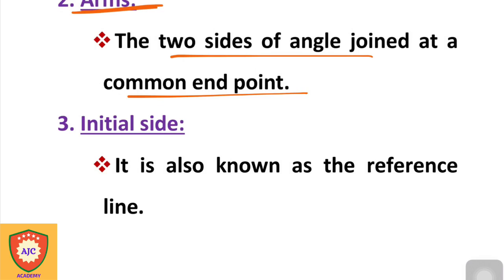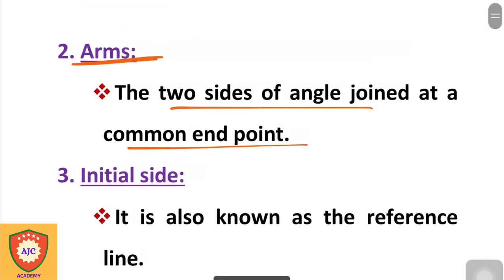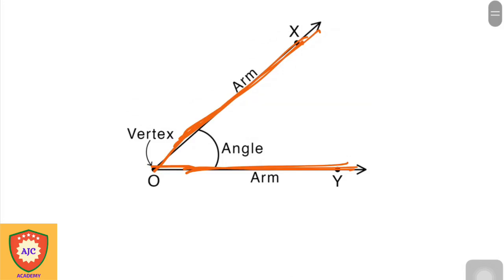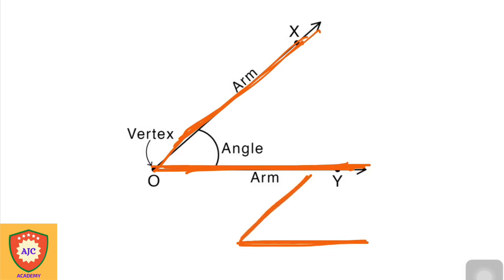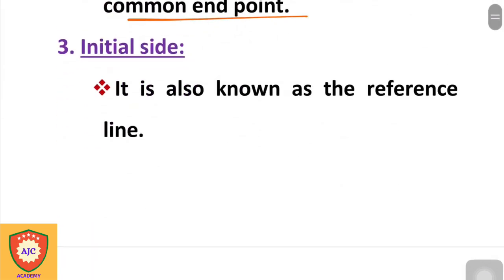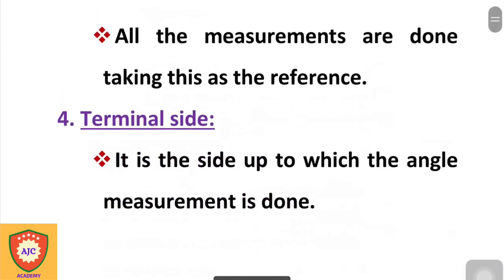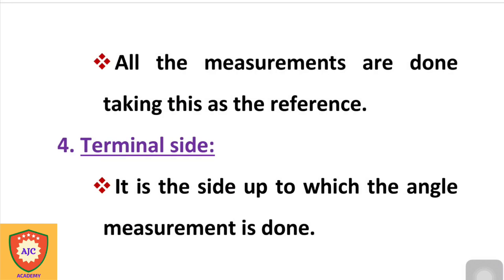The arms have two sides: the initial side and the terminal side. The initial side is also called the reference line. The terminal side is the other arm of the angle. We draw the angle starting from the initial or reference line.